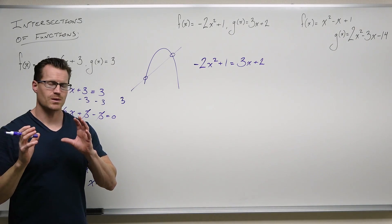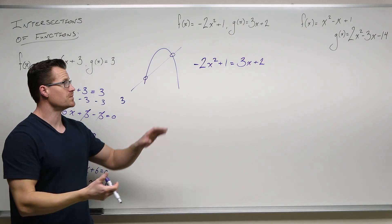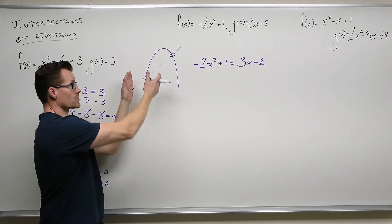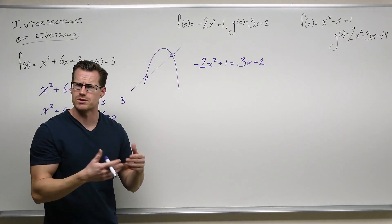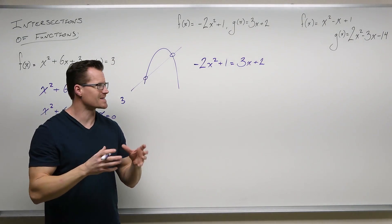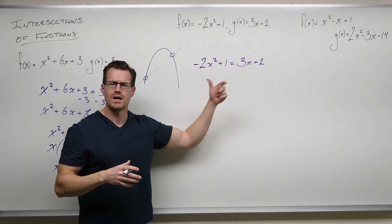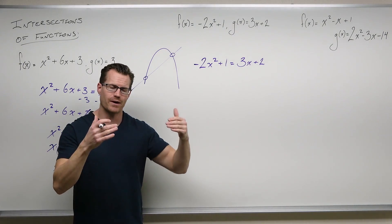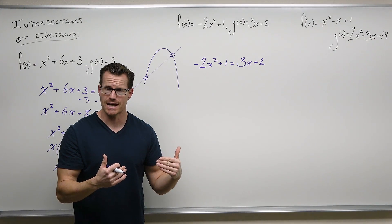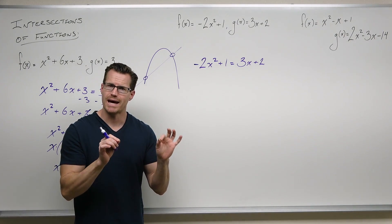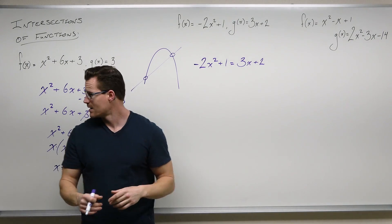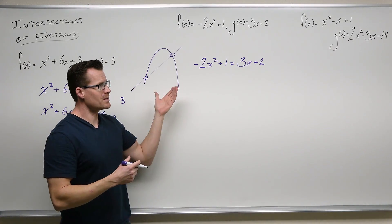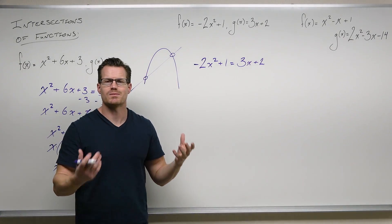From here, we don't need to keep the same nature of what these are — I don't really care that it's a parabola and a line. In order to solve this, we're basically going to change this to a different parabola, find out where that parabola crosses the x-axis, and those x-intercepts are going to represent the x-coordinates of the points of intersection, just like we did in the previous example.